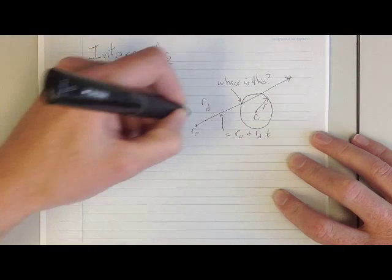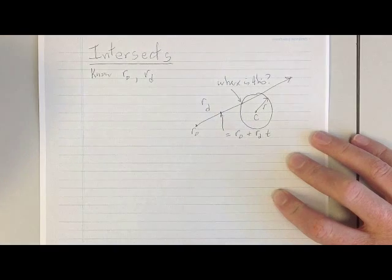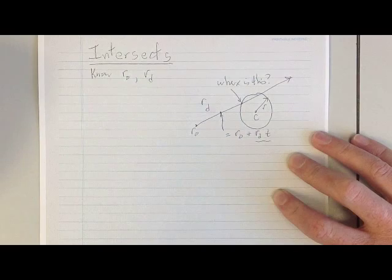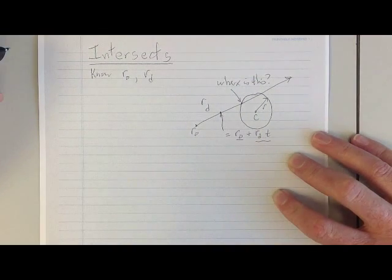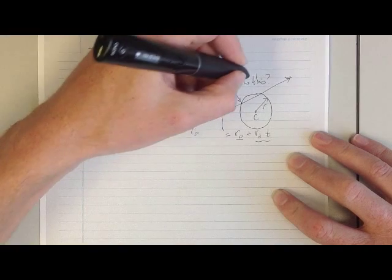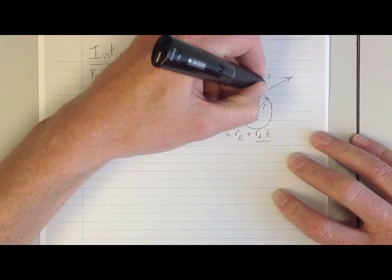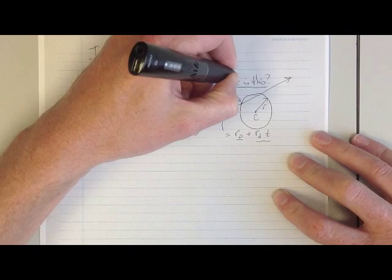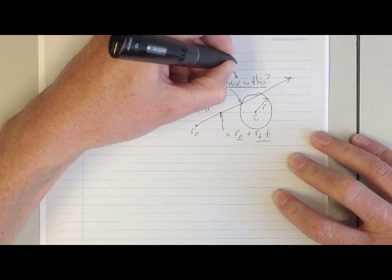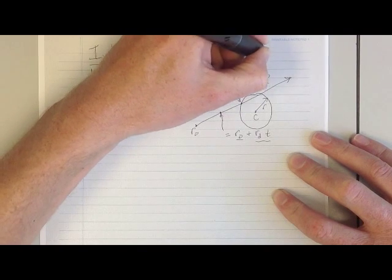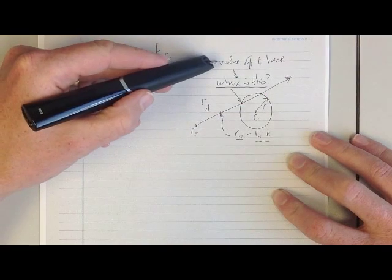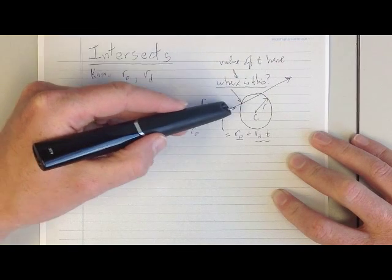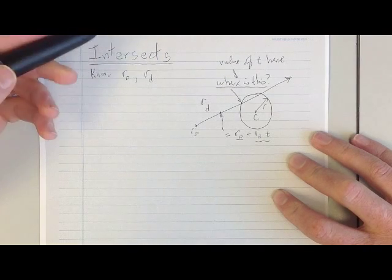As we do intersection calculations, we're going to take advantage of the parametric representation of the ray. That is, any position on the ray is equal to the ray origin plus the ray direction scaled by some value T. So if I give you a point on the ray, you can give me a value of T, which tells me how many multiples of the ray direction are needed to go from the ray origin to that point on the ray.